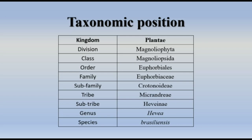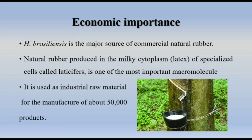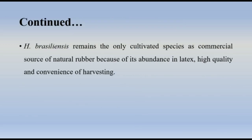Economic importance: Hevea brasiliensis is the major source of commercial natural rubber. Natural rubber is produced in the milky cytoplasm of specialized cells called laticifers. Latex is one of the most important macromolecules and is used as an industrial raw material for the manufacture of about 50,000 products. Hevea brasiliensis remains the only cultivated species as a commercial source of natural rubber because of its abundance in latex, high quality, and convenience of harvesting.